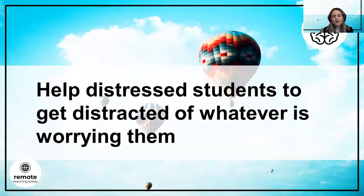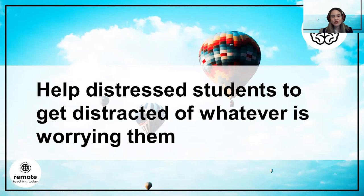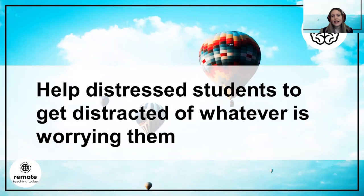The second technique is helping students distract themselves. What can we do? We can train them with different grounding techniques — for example, getting them to look for a red object in the room, or count how many pink objects they can see, when they are acting out aggressively. Or if they are higher-level students, you can get them to count backwards in nines — that takes concentration and changes their focus.